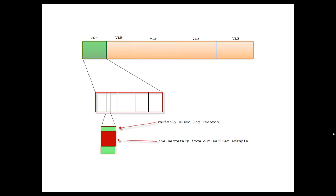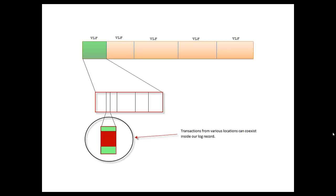All right, so moving forward, inside these log chunks, these log blocks are the log records themselves. So notice they are variably sized log records and you can see from our earlier discussion we have the my secretary because she takes up a lot more than SP_who is active, I promise, in my mind. But you can see that they're stored together. And in the next slide we can see that transactions from various locations can exist and they're stored together.